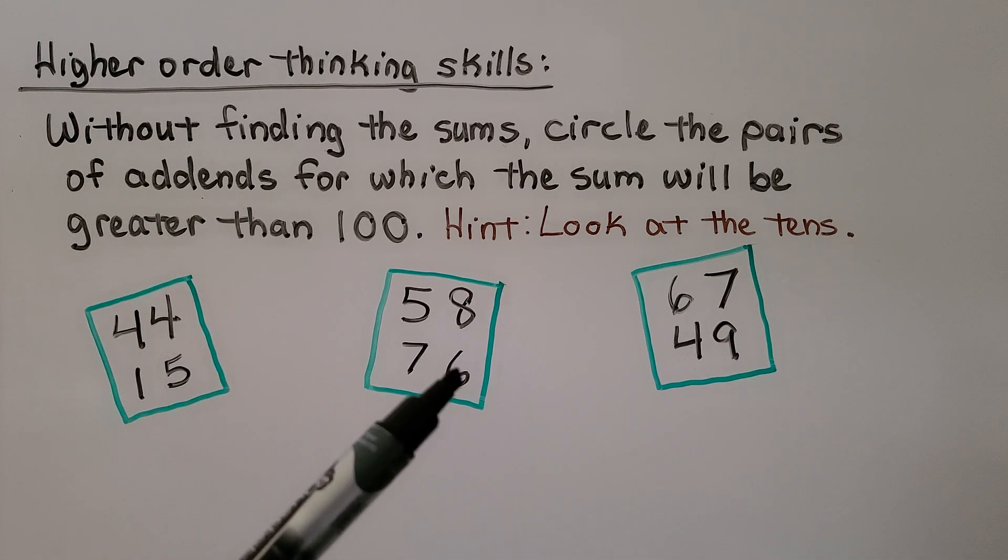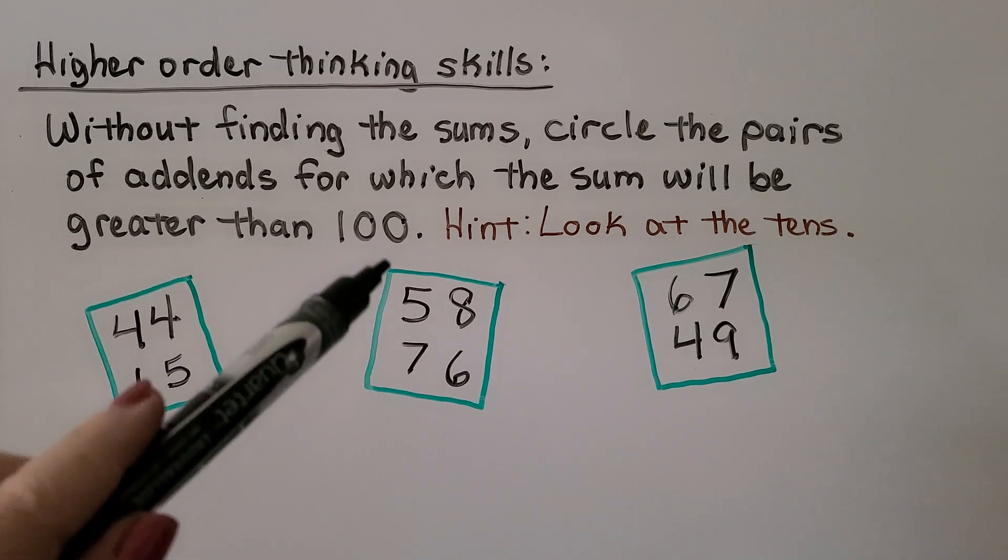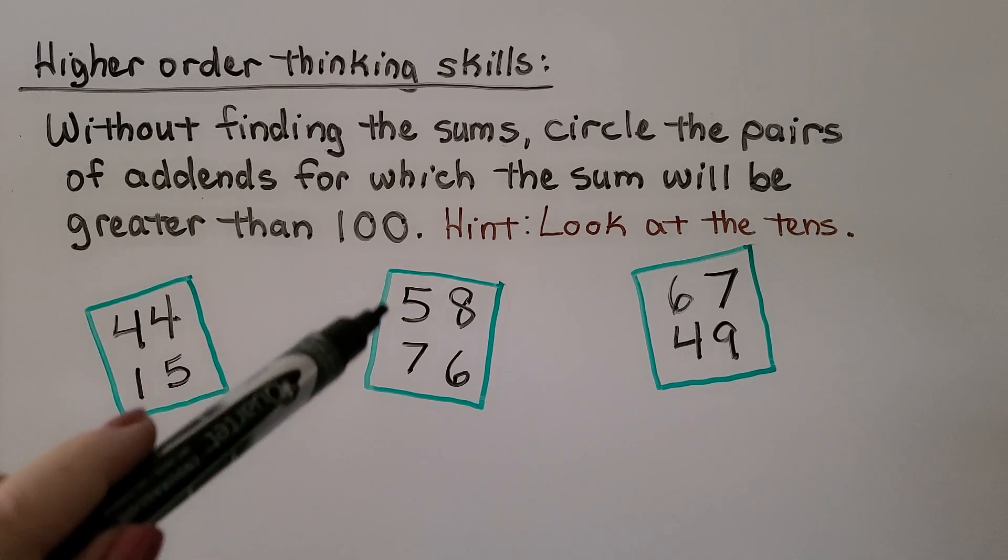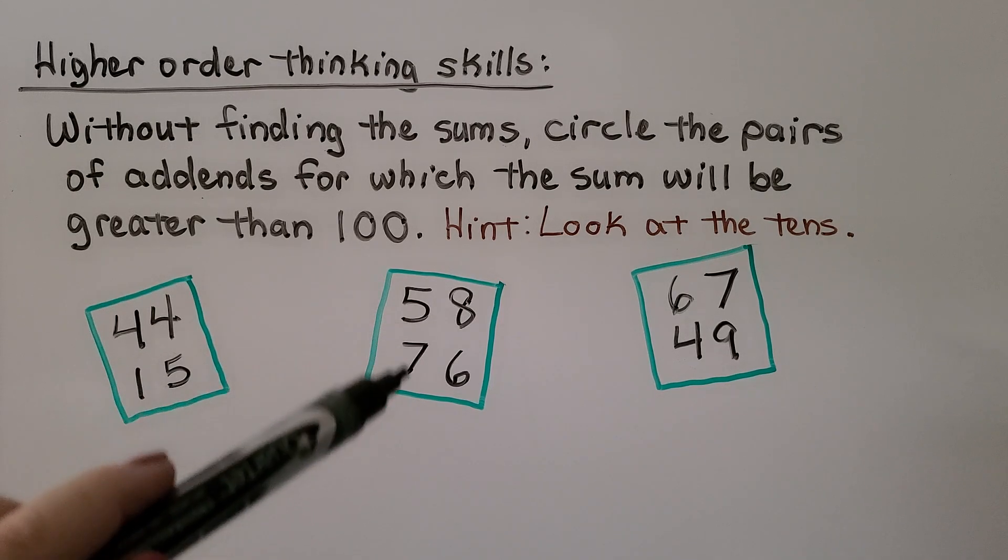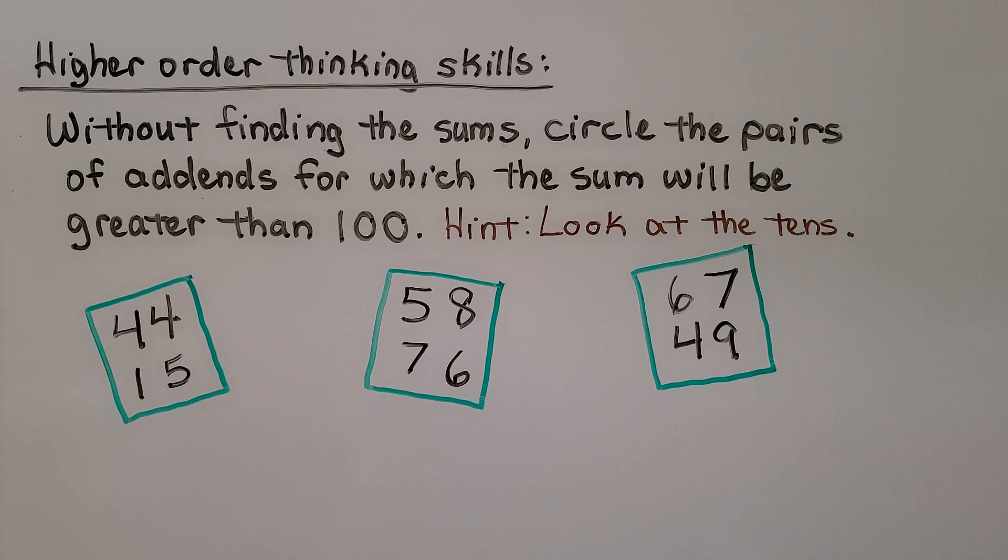Fifty-eight and seventy-six - if we just add the tens, we have five tens and seven tens. That's twelve tens. Yeah, that would be greater than one hundred. We could circle that one.